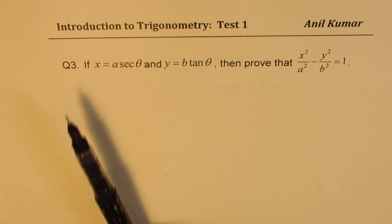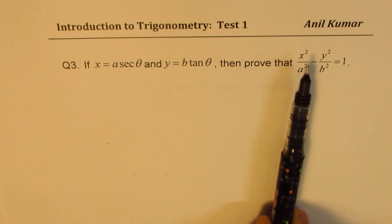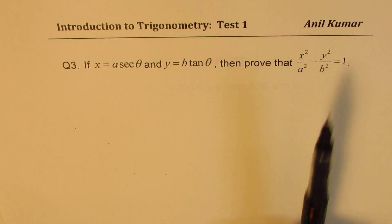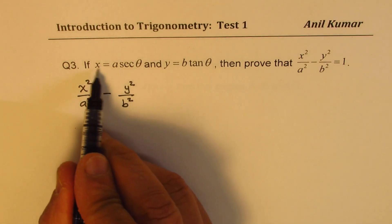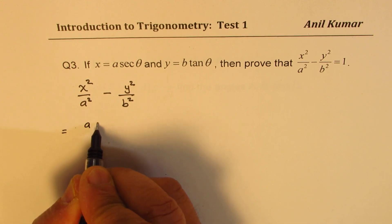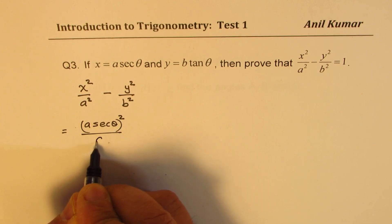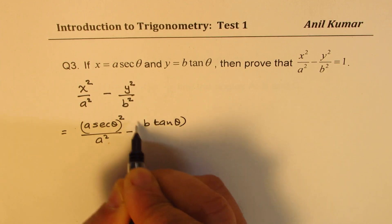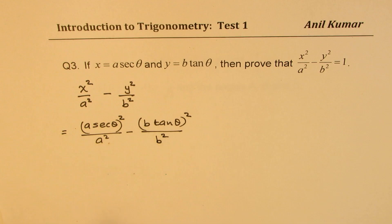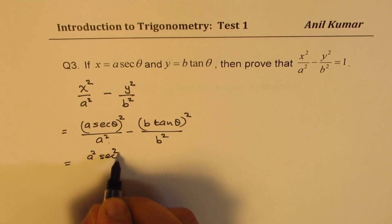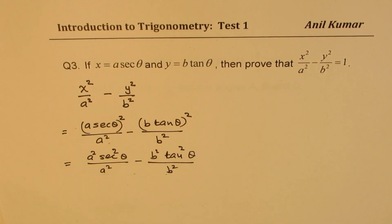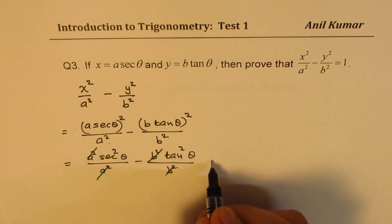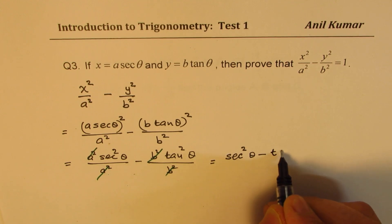Now question number three: if x equals a secant theta and y equals b tan theta, prove that x squared over a squared minus y squared over b squared equals 1. Let's begin: x squared over a squared minus y squared over b squared becomes (a secant theta)² over a² minus (b tan theta)² over b², which simplifies to a² secant² theta over a² minus b² tan² theta over b². Cancelling common terms gives secant squared theta minus tan squared theta.